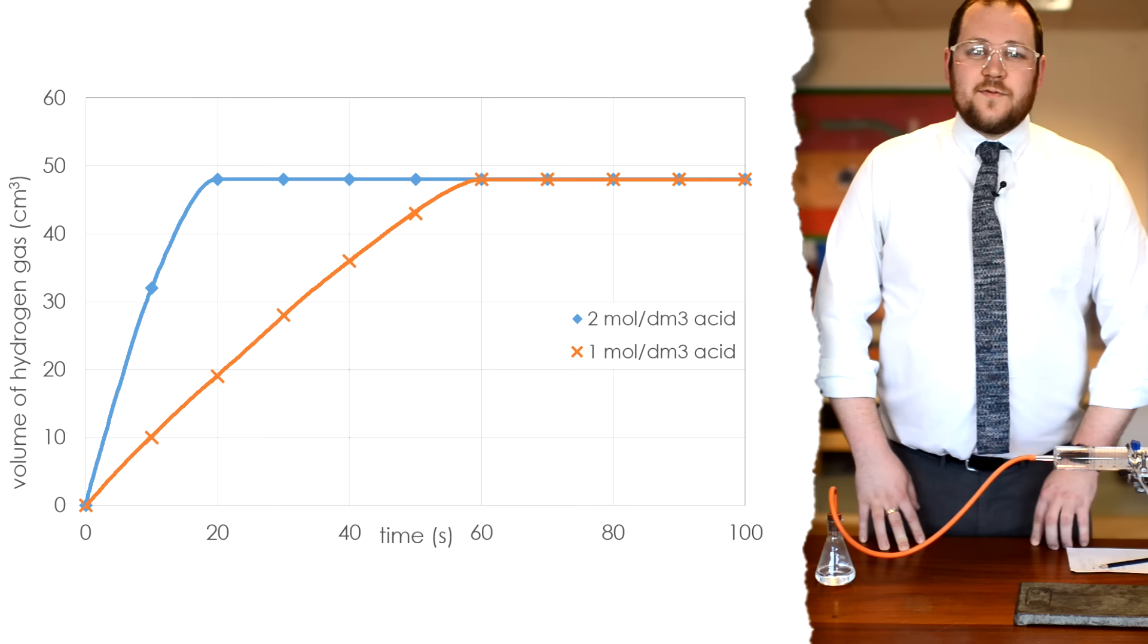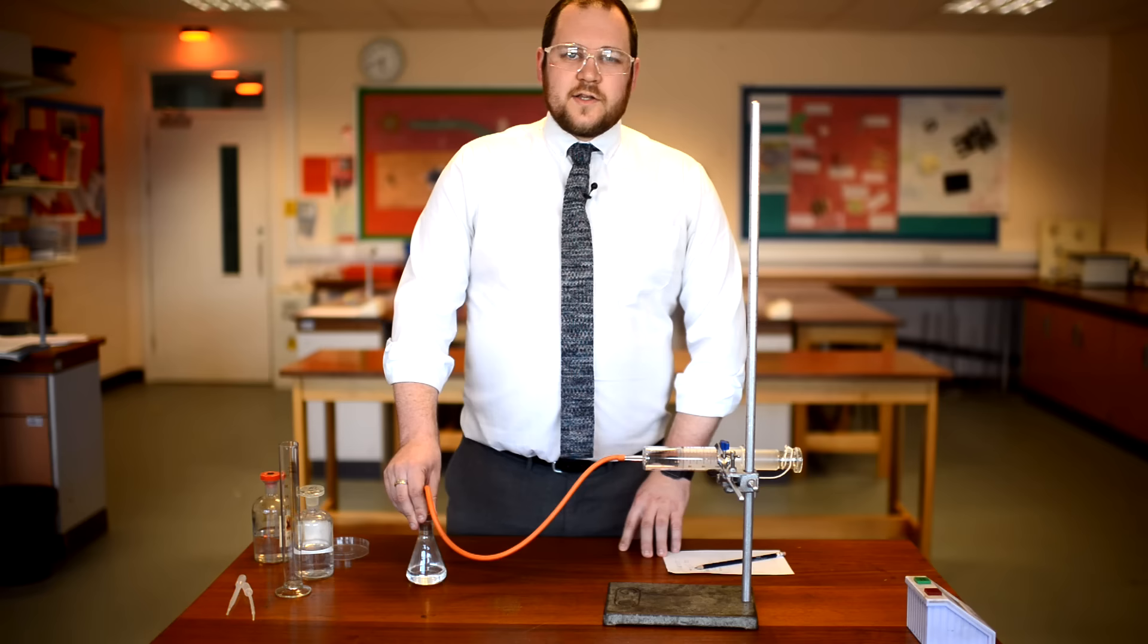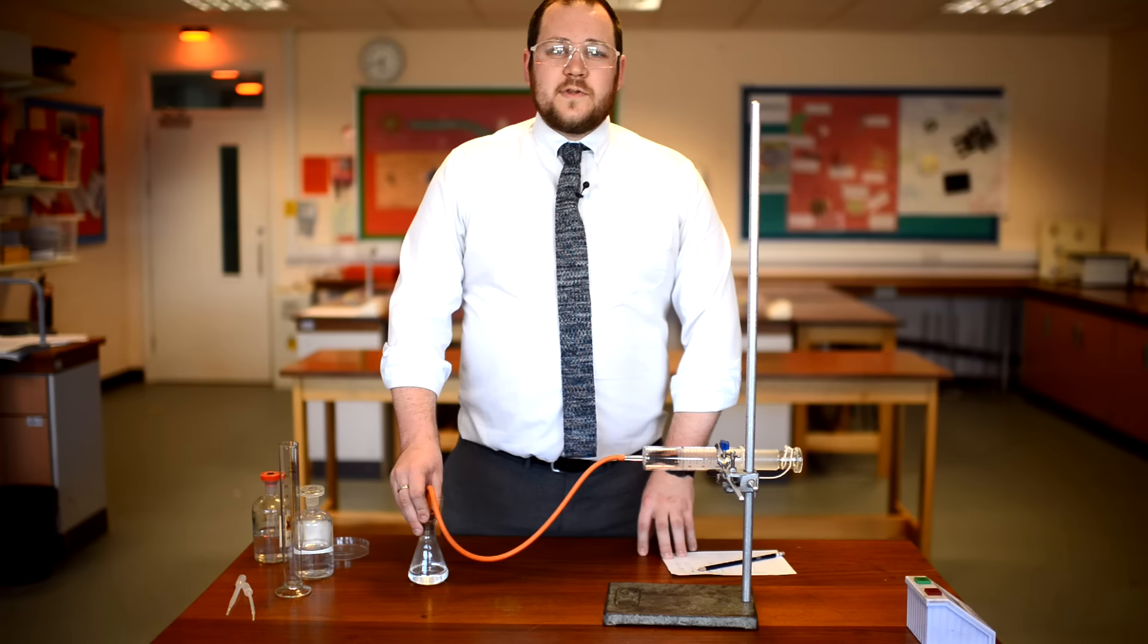There are some sources of error to be aware of in this reaction. Firstly, the fact that we are starting the timer, putting the bung in the conical flask and adding the magnesium all at the same time is impossible. This means it's a good idea to have you and a partner doing this reaction as it would be very difficult on your own.